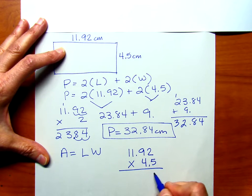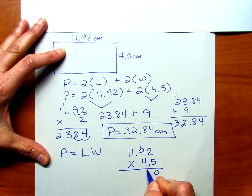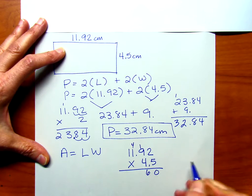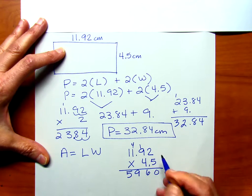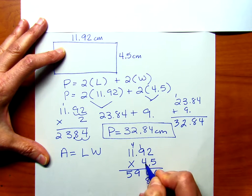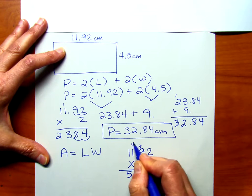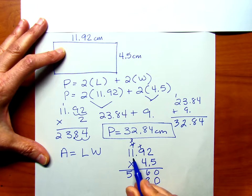So 5 times 2, that's going to be 10, that's going to be 45 plus 1 is 46, 5 plus 4 is 9, and 5. And then we're going to go down the next row, you could put a 0 here as a placeholder, 4 times 2 is 8, 4 times 9 is 36. Carry the 3, 4 times 1 is 4, plus 3 is 7, and then 4 times 1 is 4.